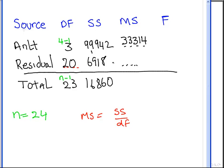And likewise, for the mean square for error, or mean square for residual, that is 6918 divided by 20. Let me just get my calculator. So it is 345.9.